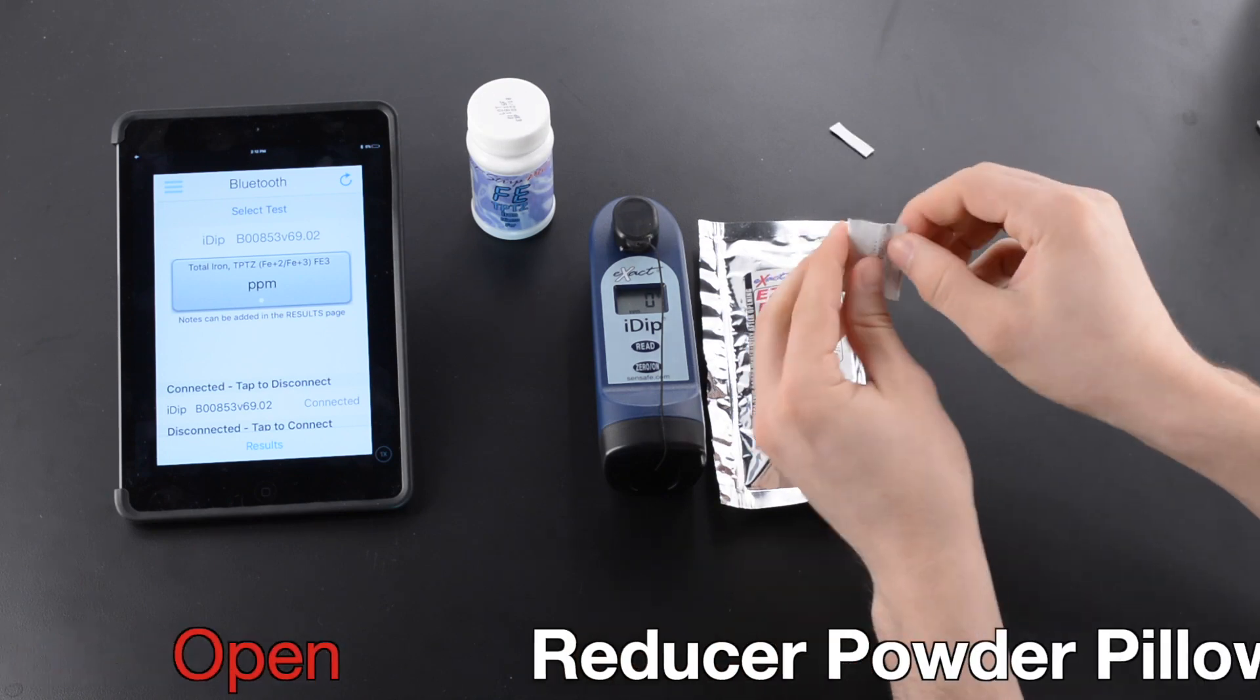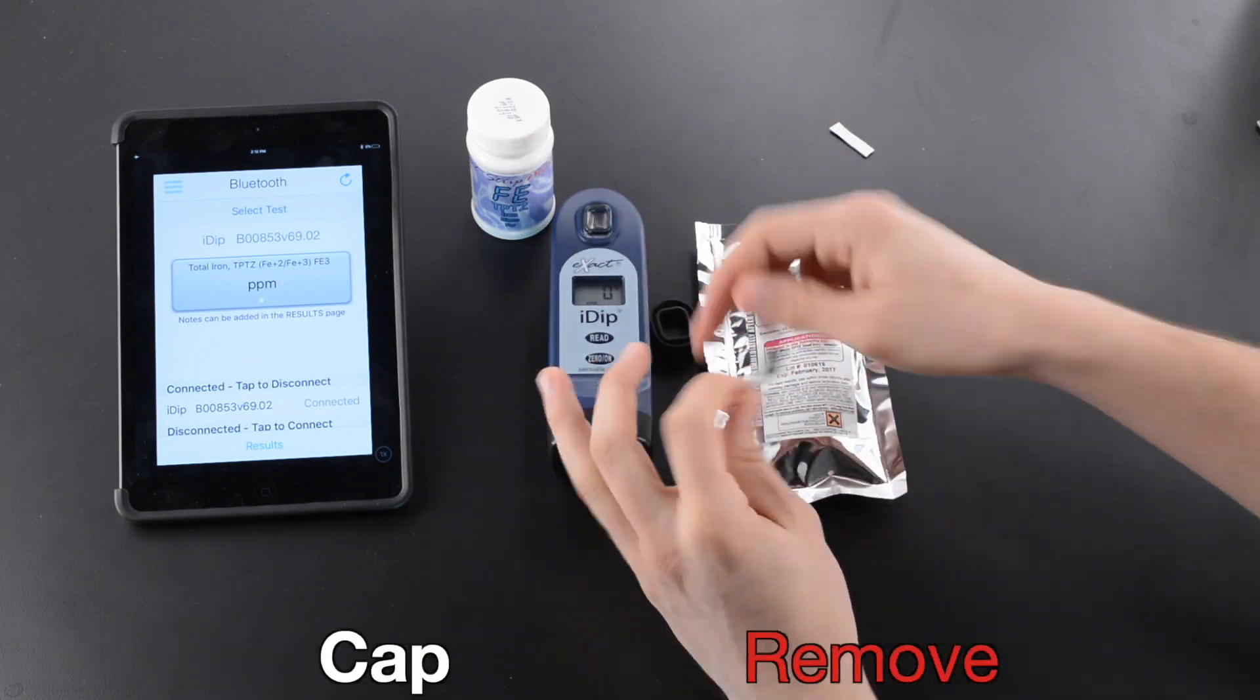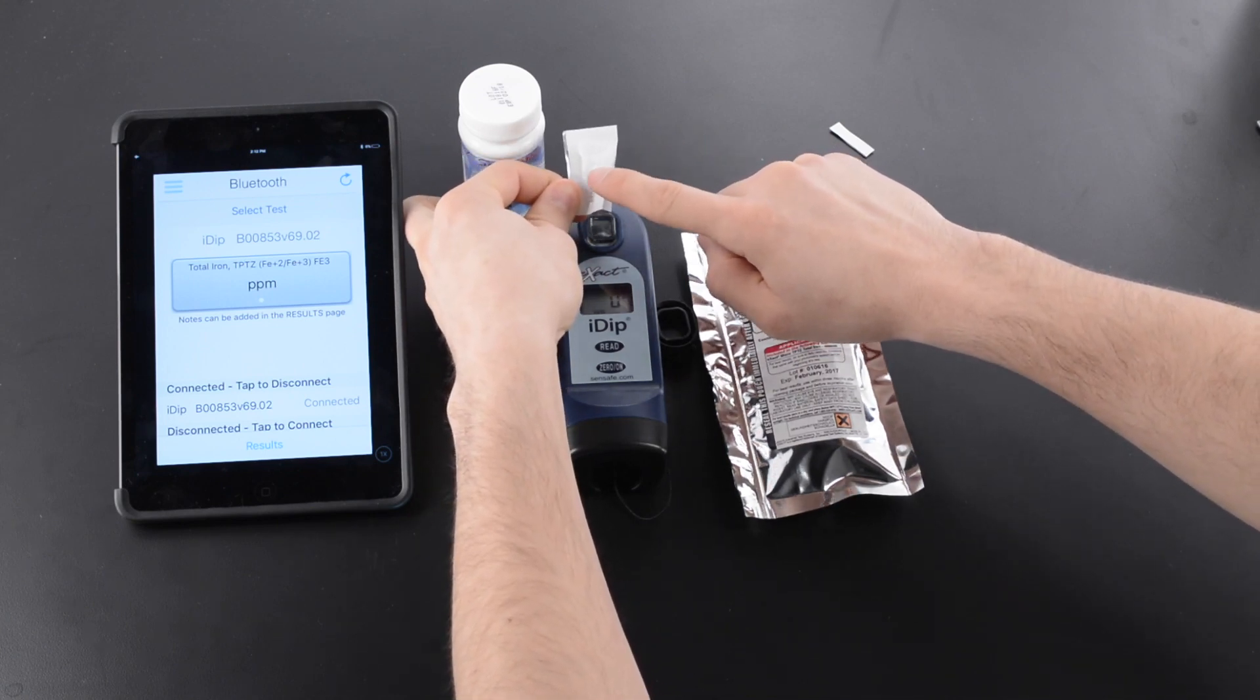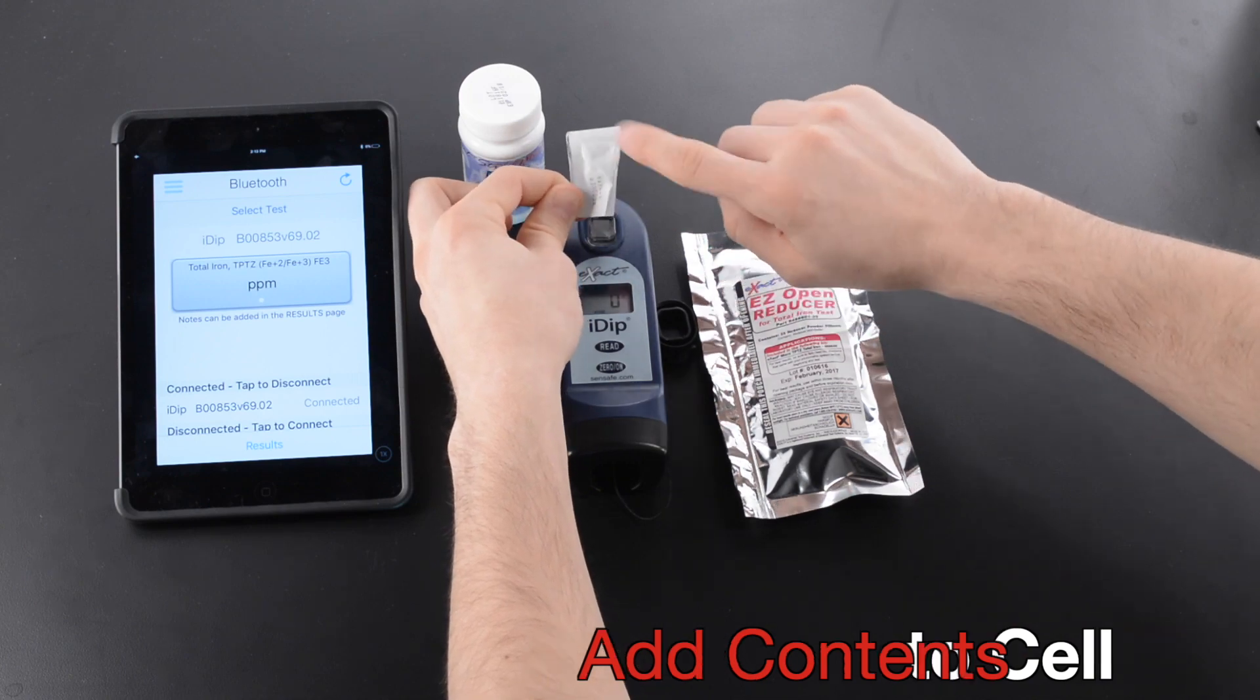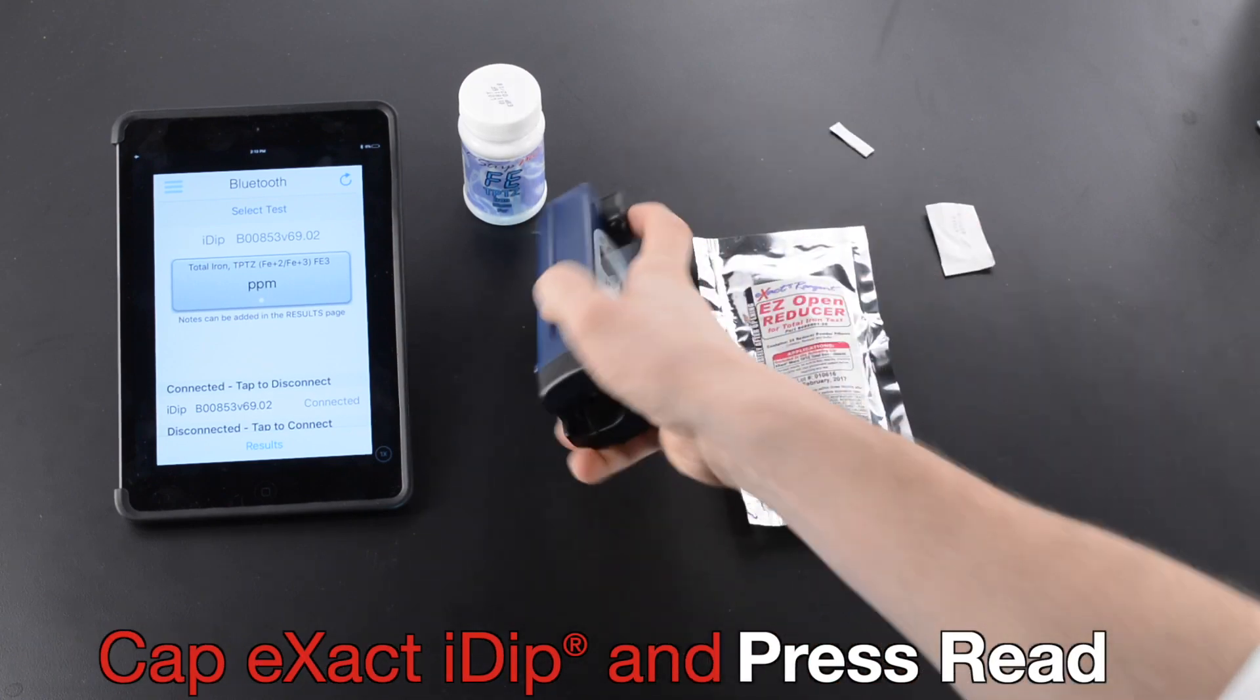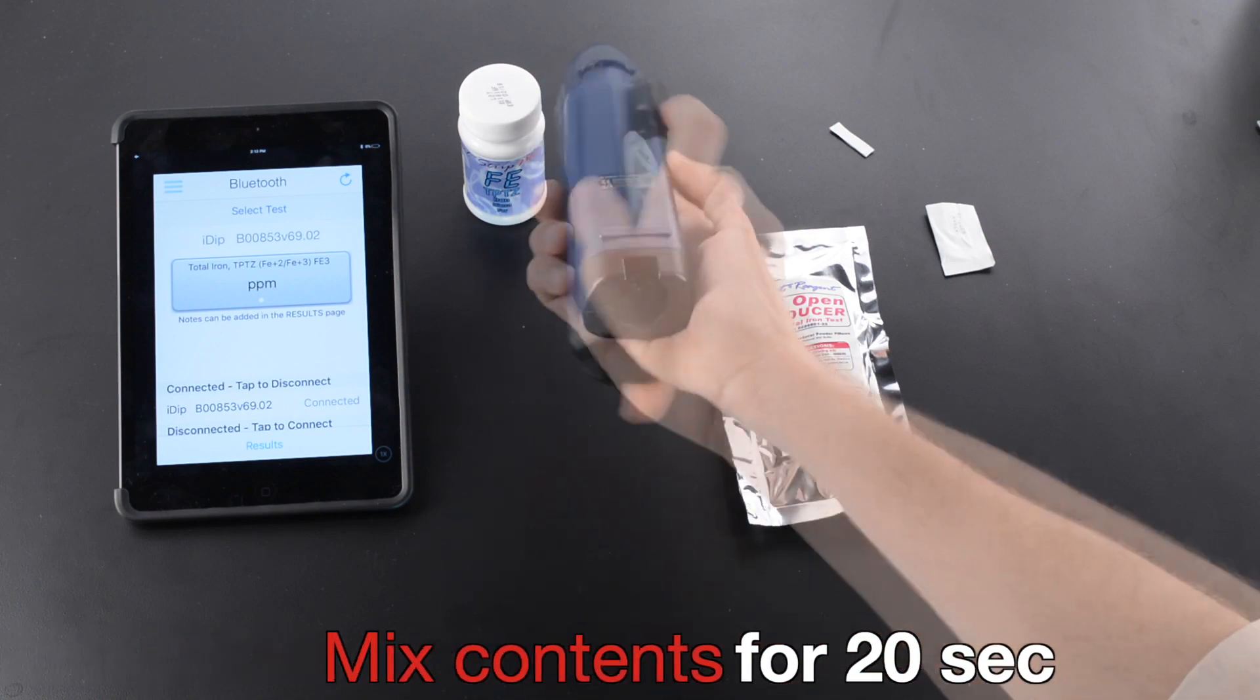Open Reducer Powder Pillow. Remove Cap. Add Contents to Cell. Cap Xact iDip and press Read. Mix Contents for 20 seconds.